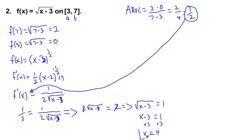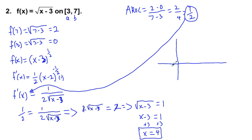One thing I didn't do initially for this problem — I should have verified continuity and differentiability on this interval. The square root of quantity x minus 3 looks like a square root graph, and between x equals 3 and x equals 7 the function is continuous and differentiable. So those are the answers. That's how to do them. Good luck and thanks for viewing.